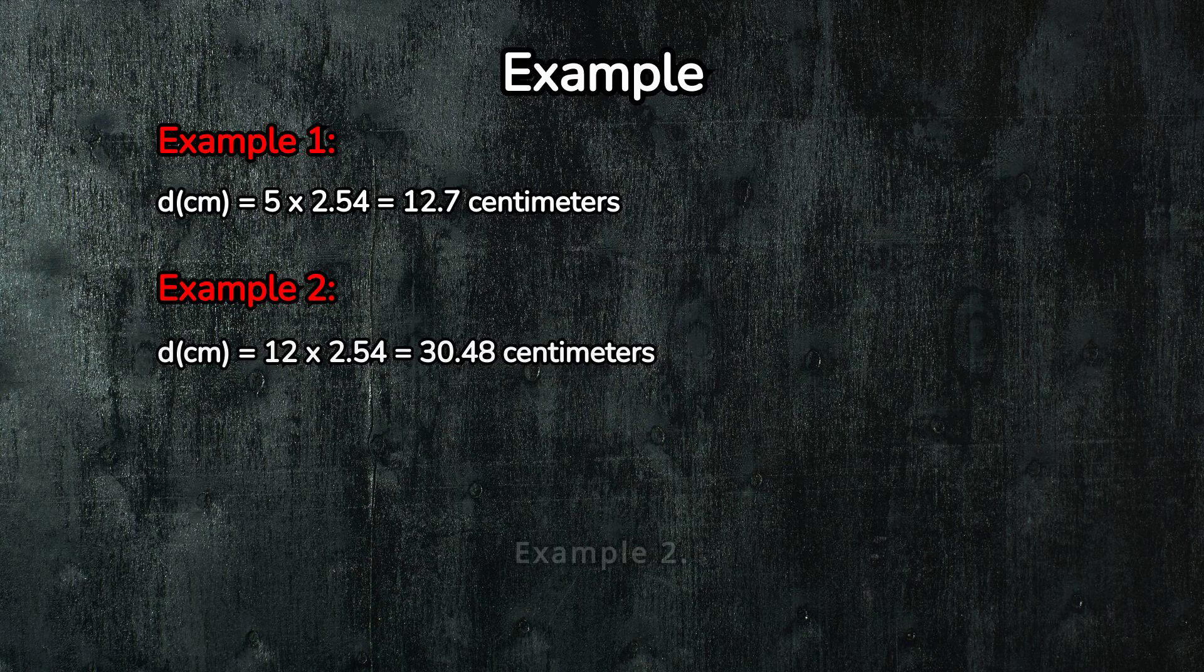Let's try another one. Example 2. What about 12 inches? Again, just multiply 12 by 2.54. That means 12 inches is equal to 30.48 centimeters. Simple as that.